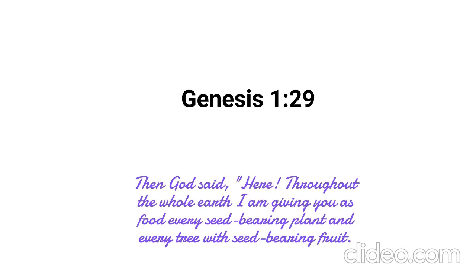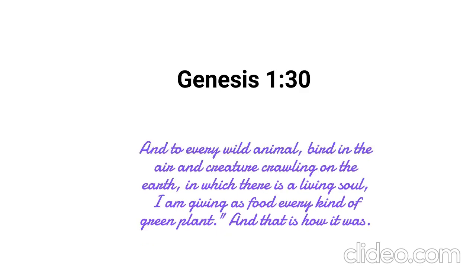Then God said, 'Throughout the whole earth I am giving you as food every seed-bearing plant and every tree with seed-bearing fruit.' We see here that we all were created to be vegetarians. As we will see later on in our studies, blood contains life and we were not created to kill anything. We must remember that this is before the fall and so it is a perfect world without death. And to every wild animal, bird in the air, and creature crawling on the earth, in which there is a living soul, I am giving as food every kind of green plant, and that is how it was. Not only were we, as humans, to be vegetarians, but the animals of the earth were not meant to eat other animals. God did not want killing and death to be a part of the earth. It is going to be like this again during the millennial reign — Revelation 20 — and on the new earth — Revelation 21.